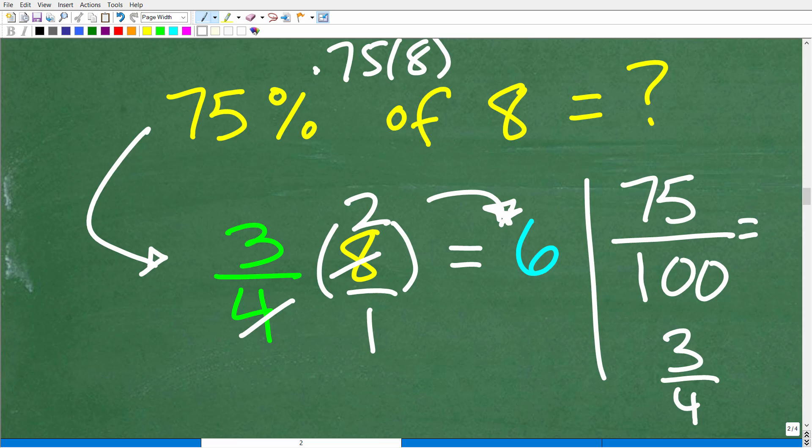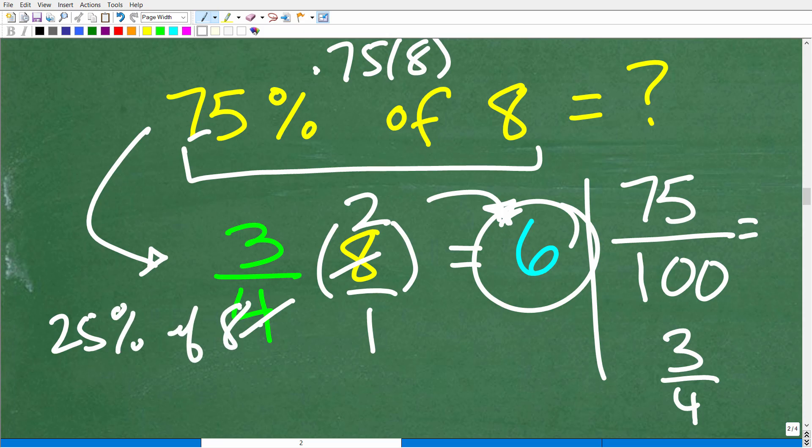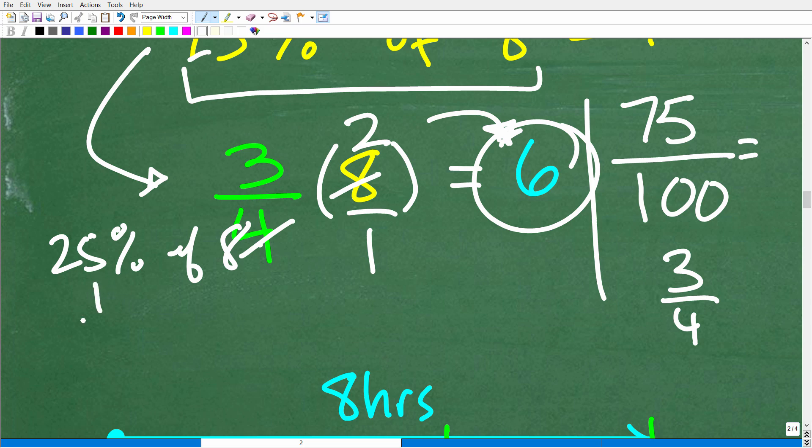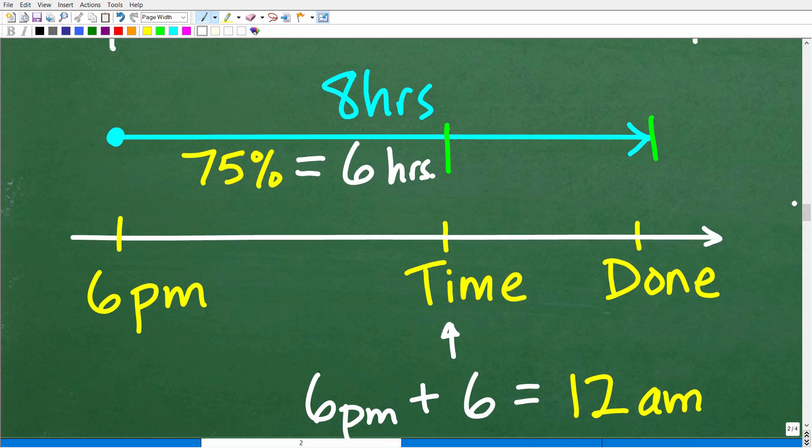Okay, so 3 fourths of 8, we're going to take that 4, divide it into 8, that's 2, so 3 times 2 is 6. Those are 2 approaches you can take to figure out 75% of 8. Now, you could have, by the way, done 25% of 8. 25% is the same thing as 1 fourth times 8, which is 2 hours. But if you have the number of hours already worked, I think it's a little bit easier to calculate what time it is.